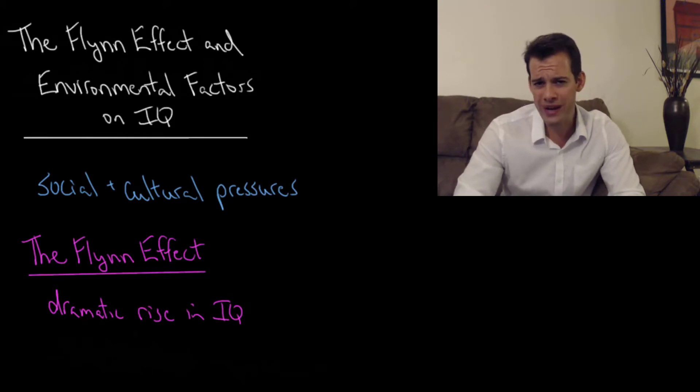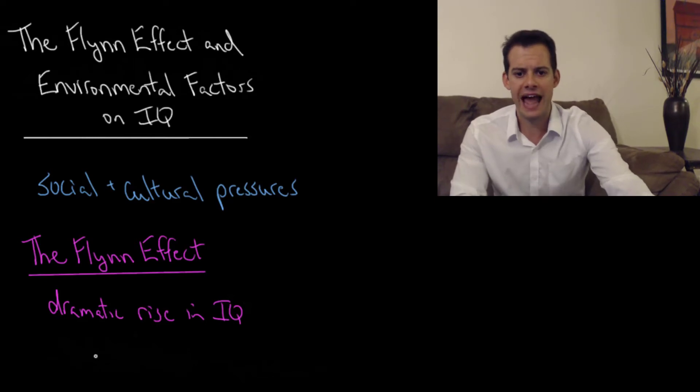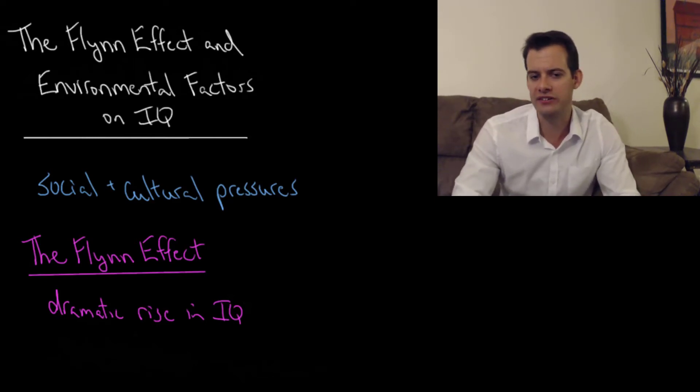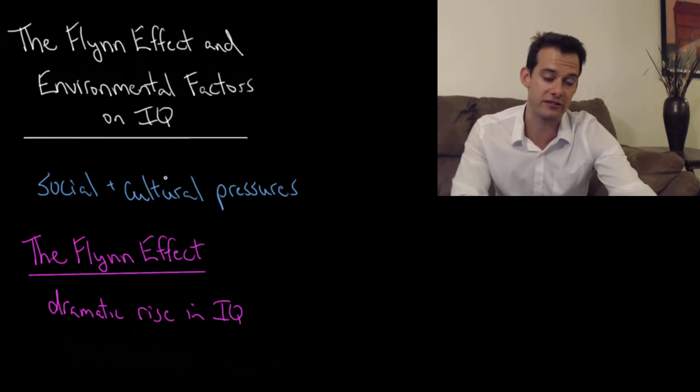Another way we can think about differences in performance is to think about differences over time. Rather than comparing people now, comparing different races in terms of their average performance today, we can think about overall populations compared to populations in the past. This brings us to what's called the Flynn effect. This is a term that was coined by Richard Herrnstein and Charles Murray in the bell curve and it refers to research by James Flynn on the rise in IQ over time. Flynn demonstrated that the average IQ seems to have risen about 3 points per decade over the past few decades.